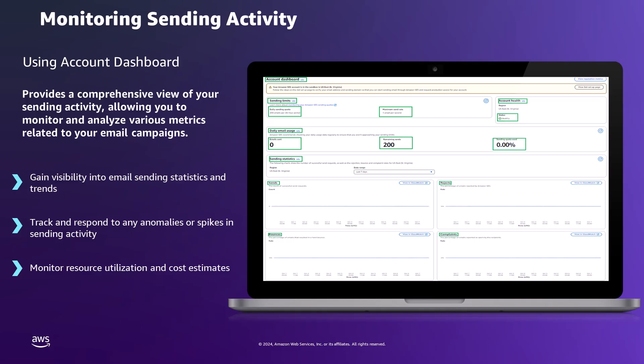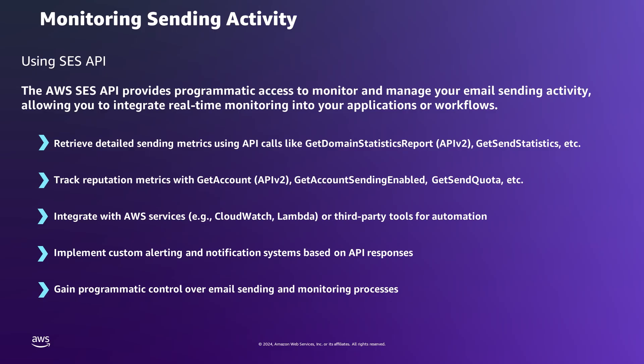This proactive approach not only ensures smooth email operations, but also enables early detection and mitigation of potential issues, ultimately supporting optimal email sending performance. Amazon SES offers powerful API operations for programmatically monitoring email sending activities. These APIs are readily accessible through multiple interfaces: AWS SDKs, AWS Command Line Interface (AWS CLI), and the AWS Management Console, providing flexibility to match various operational needs.